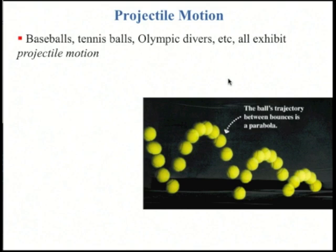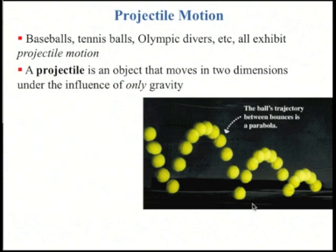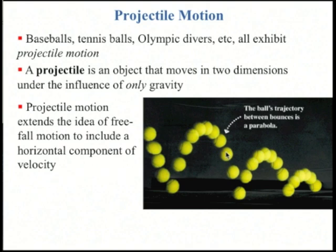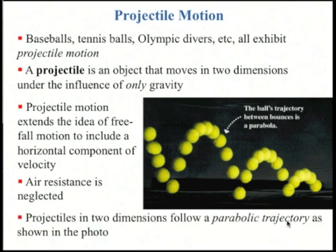Projectile motion. Baseballs, tennis balls, people flying through the air can all exhibit projectile motion. A projectile is an object that moves in two dimensions, so some vertical plane here, under the influence of only gravity. Projectile motion extends the idea of freefall to include some horizontal component of the velocity. And in this chapter we will neglect air resistance. So as you can see from this motion diagram, strobe-like motion diagram of a tennis ball, projectiles in two dimensions follow this curve trajectory that is actually a parabola.